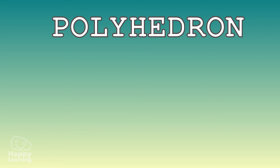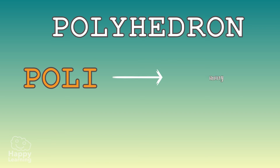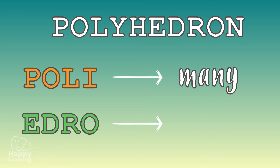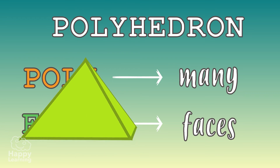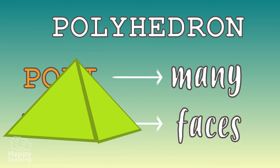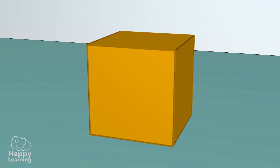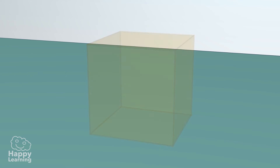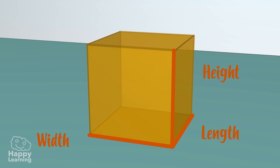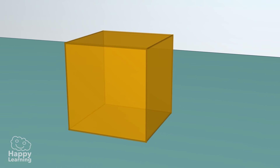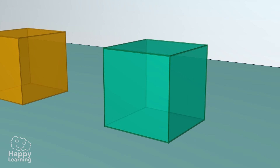The word polyhedron comes from Latin: poly meaning many, and hedron meaning faces. So its name tells us that polyhedrons have many faces. Polyhedrons are geometric bodies formed by several polygons. They have volume — that is, they occupy space in three dimensions, with length and height. A very important thing about polyhedrons is that they are formed by three different elements: faces, vertices, and edges.